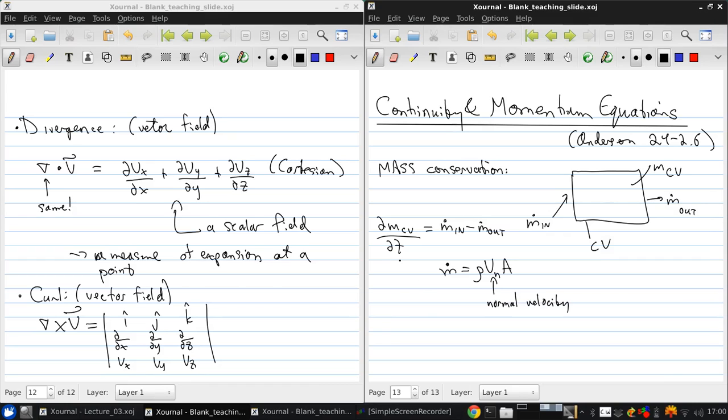Now if we take this control volume and we shrink it down to infinitesimal size, then we end up with a differential equation which simply says that the time rate of change of density plus the divergence of the density times the velocity must be zero. So again, this is how much this density times velocity field is expanding away or contracting in to a point. And that simply must be balanced by the time rate of change of the density at that point. Very intuitive.